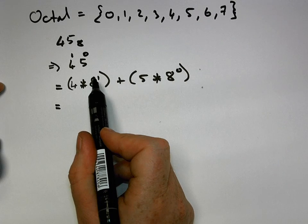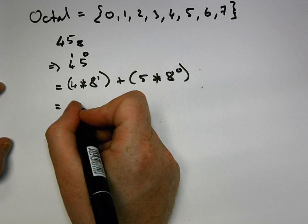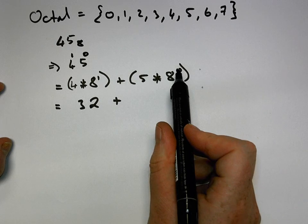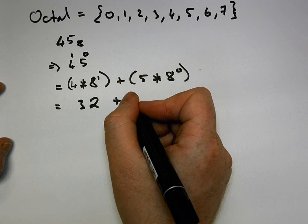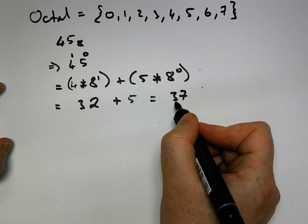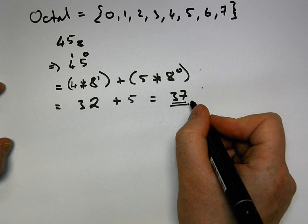So 8 to the power of 1 gives us 8, multiplied by 4 gives us 32. 32 plus 8 to the power of 0 is 1, times 5 is 5. 32 plus 5 is equal to 37. So we say 37, which is base 10.